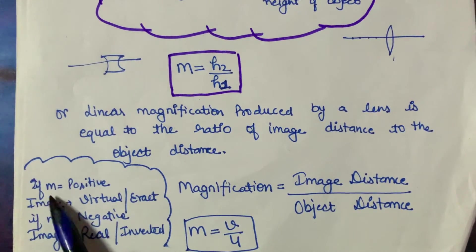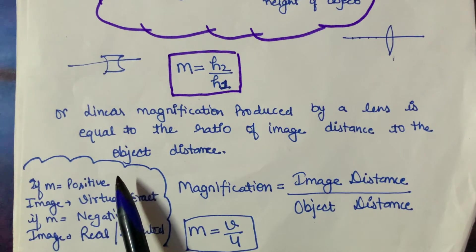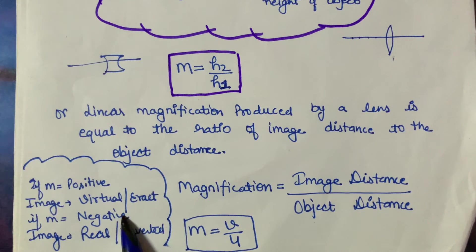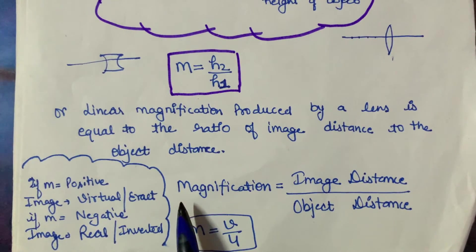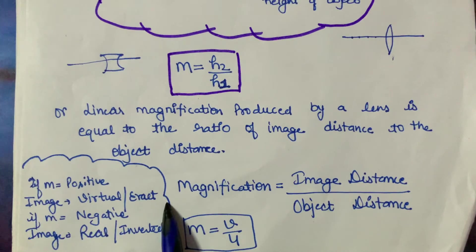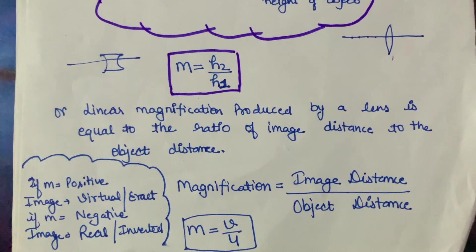One more important point: when solving numericals, if the magnification value comes out positive, then in that case the image will always be virtual and erect — it will form on the left side. And if the magnification value comes out negative, then in that case the image will be real and inverted. So while solving numericals, you can automatically check: if this is not happening, it means there is some calculation mistake. So, M positive means virtual and erect; M negative means real and inverted image.